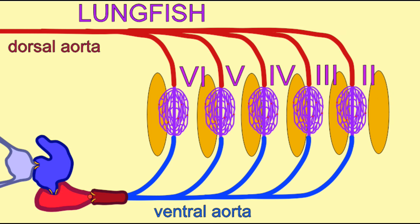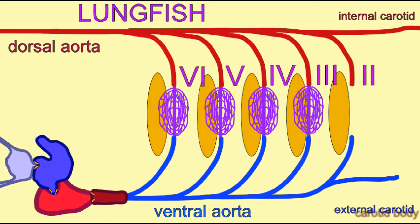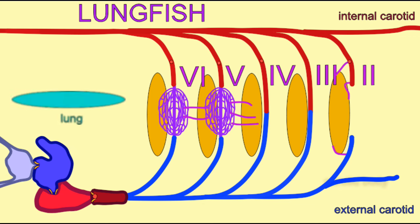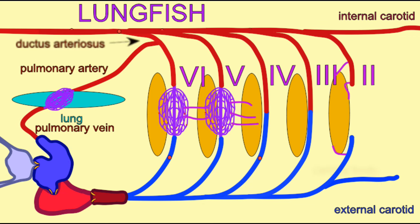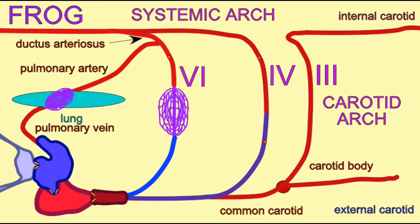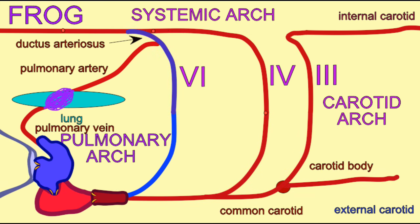While the ancestral Sarcopterygian fish, like lungfish today, possess a series of aortic arches which proceed to the gills where oxygen is exchanged, frogs have modified this so that they no longer have a series of aortic arches supporting gills. Many salamander larvae, however, do possess external gills, which are supplied by multiple aortic arches.